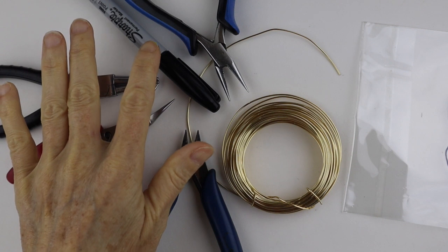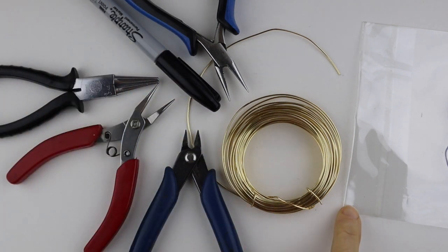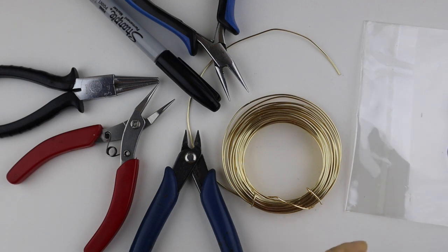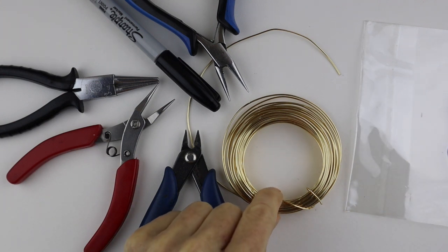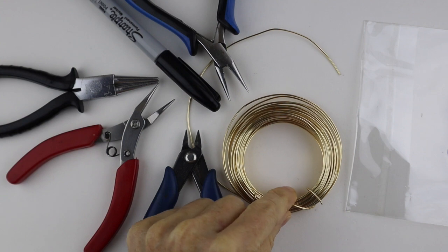What we're going to need for this project is your tools, a black Sharpie, some acetate or this plastic envelope from a greeting card. You could use a plastic bag if you want, and I'm going to use 18 gauge wire, but you can use any wire you want depending if you're making it big or small.